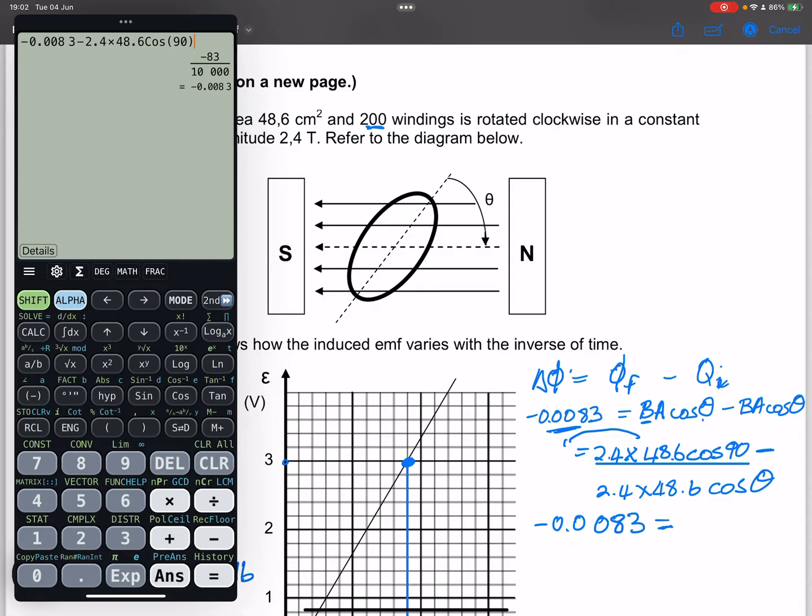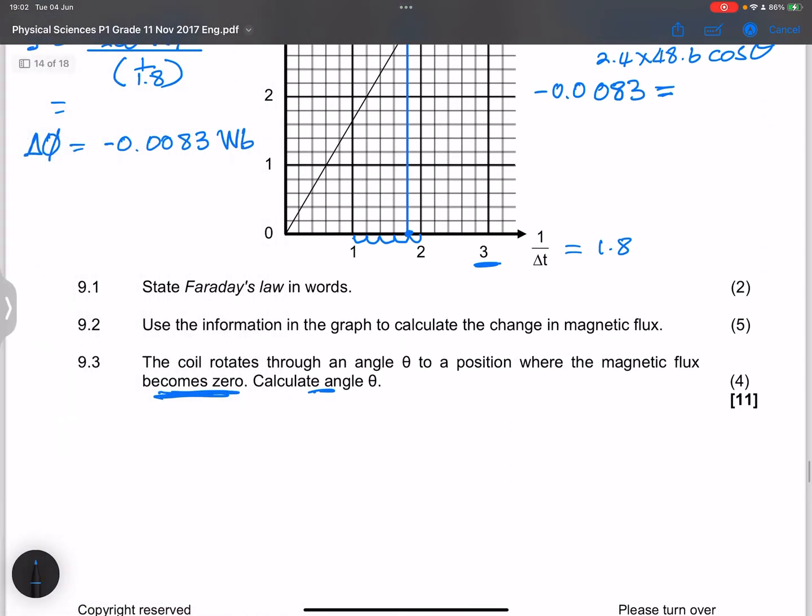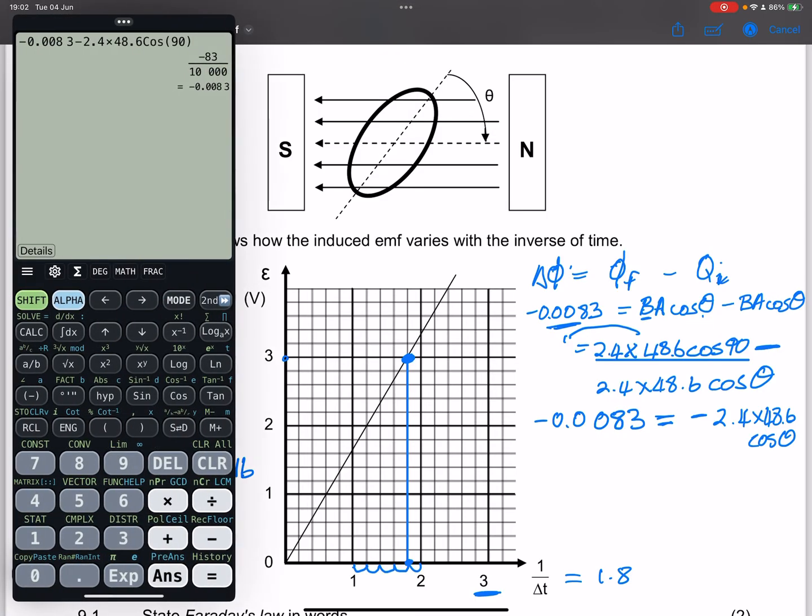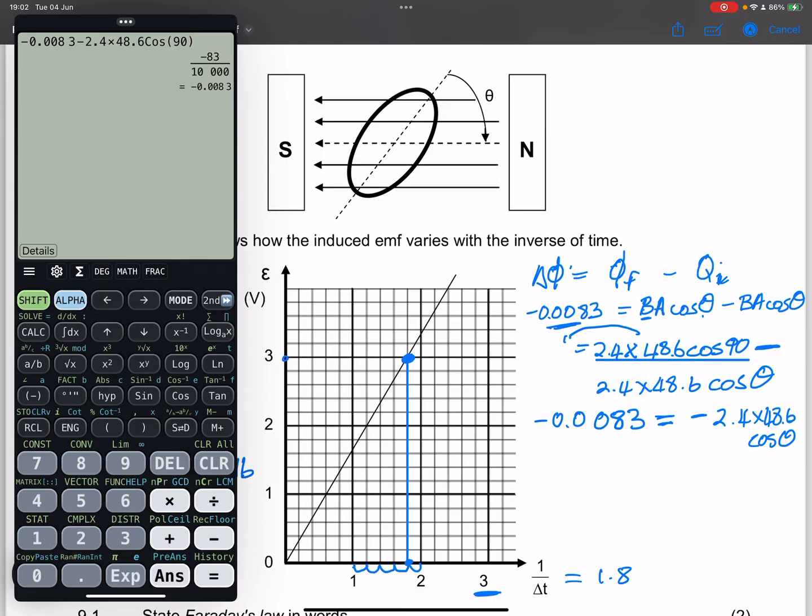So this is equal to, we've got minus... remember there was that negative sign there. So what I'm going to do is I'm going to take all of that and divide by negative 2.4 times 48.6. And that's the answer that I will get over there. And in this case, I want to find out what is the angle theta.